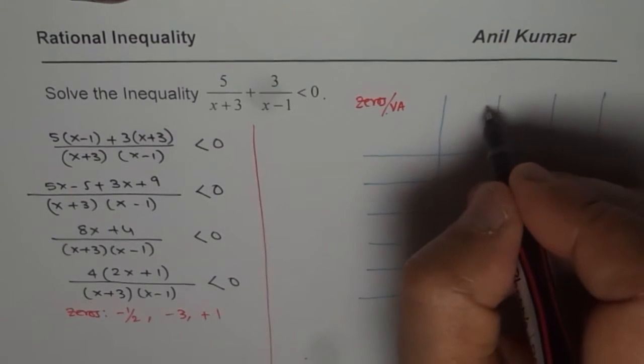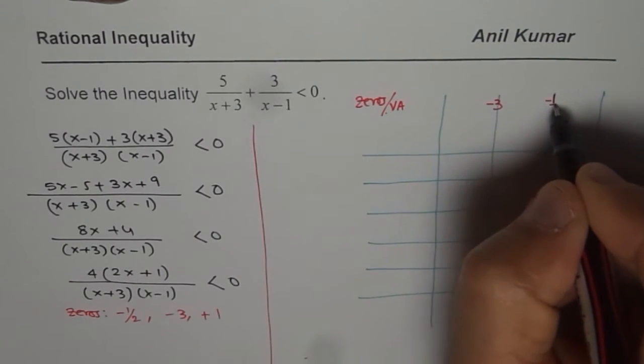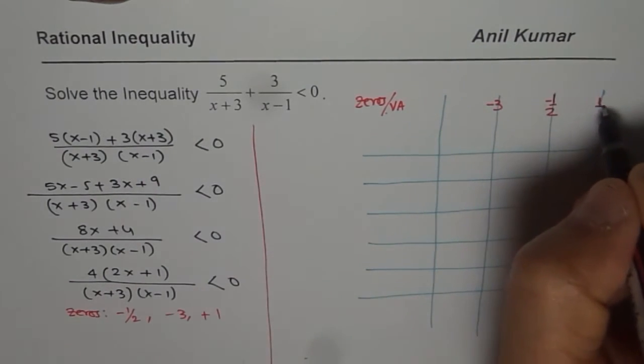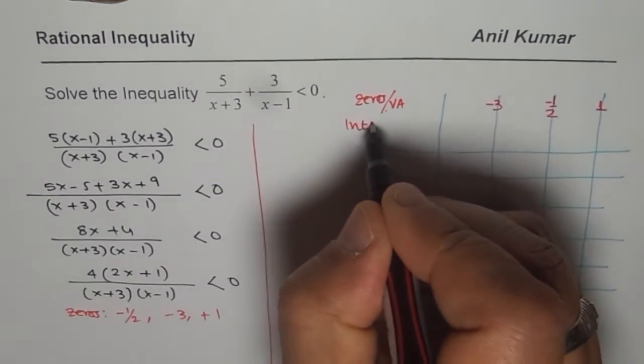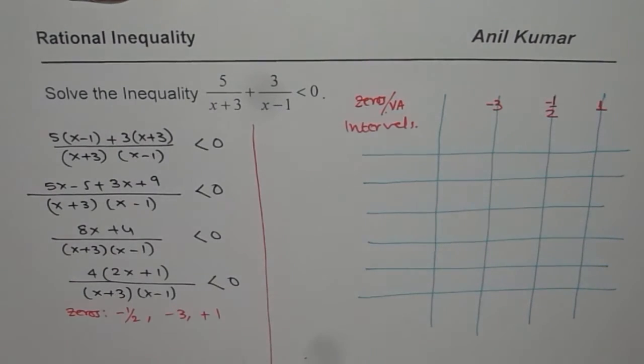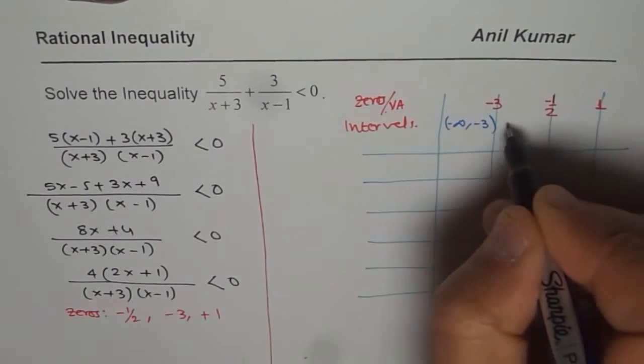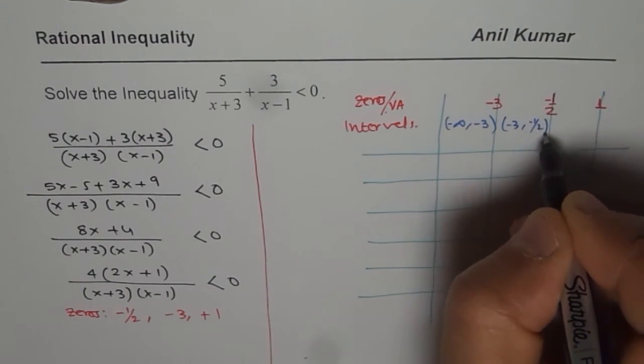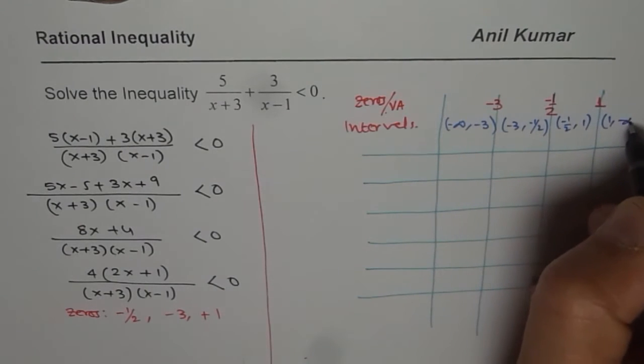We should write them in order minus 3, so let me write minus 3 here and then we have minus half and plus 1. These zeros divide the intervals. One interval is from minus infinity to minus 3, then we have minus 3 to minus half, minus half to 1, and then from 1 to infinity.